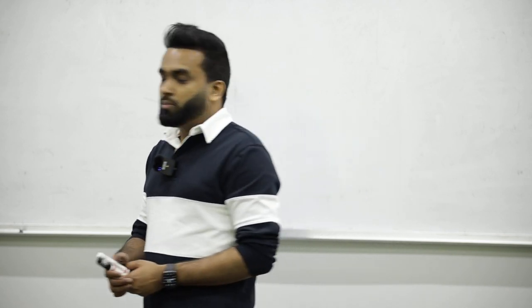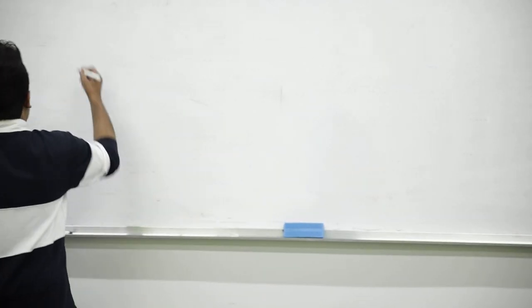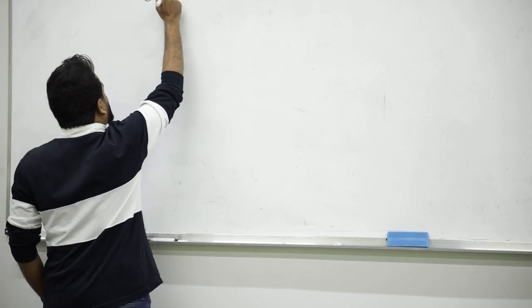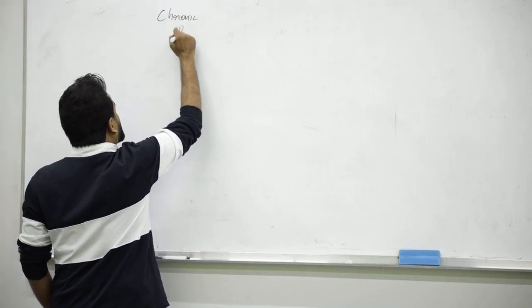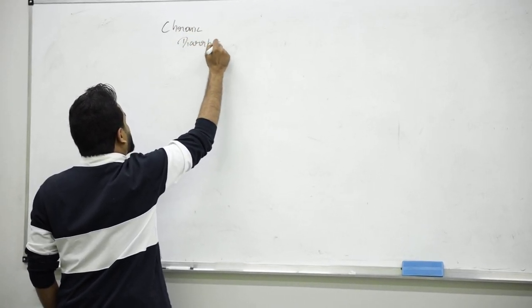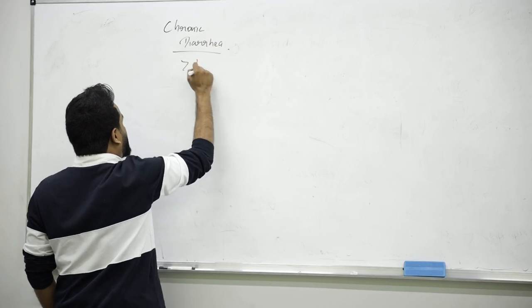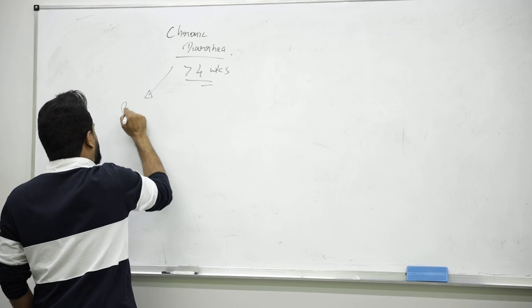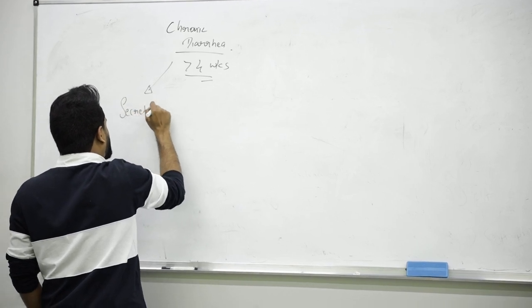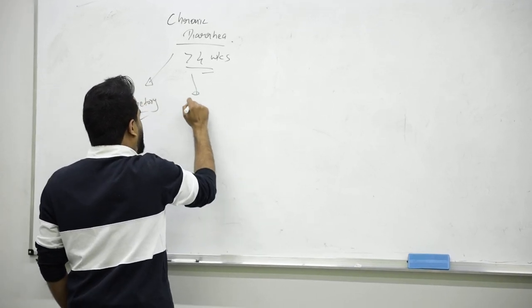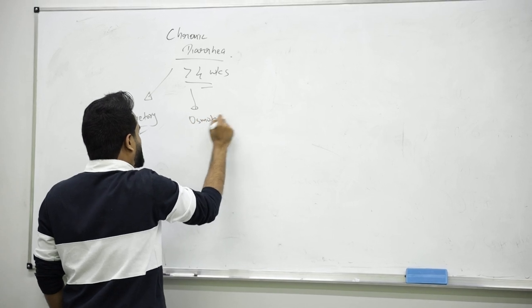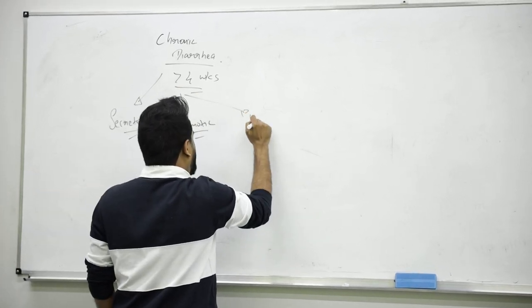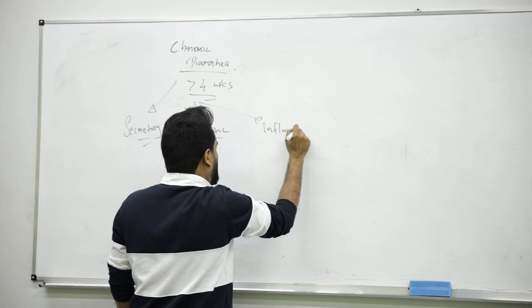Next, we're going to talk about chronic diarrhea. Chronic diarrhea is defined as lasting more than four weeks. We can classify this into secretory type, osmotic type, or inflammatory type.